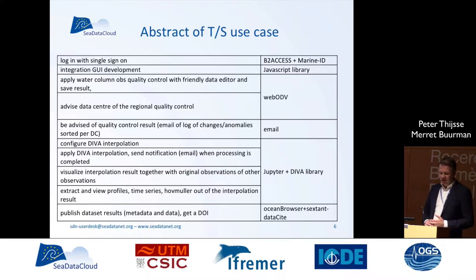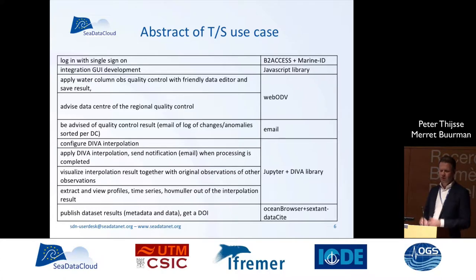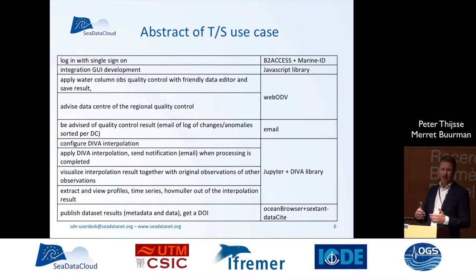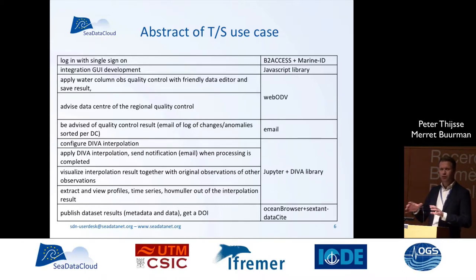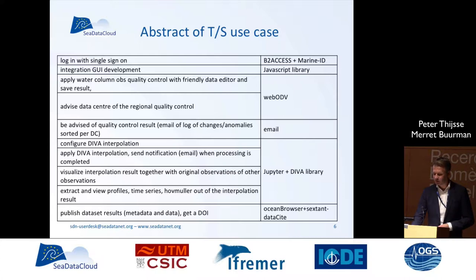Here is an example of the temperature and salinity use case. You log in and get a GUI that helps you with the user interface. You choose the tools you want and apply something - in this case, you apply the quality control using ODP. You save the results and you can email them. Then you apply the interpolation - or you work in the Jupyter Notebook. You view the output and save it. Finally, you get a DOI and release it in the catalog.